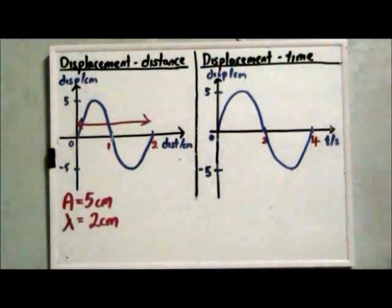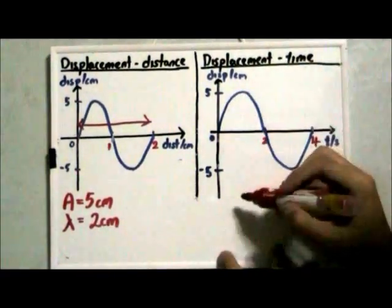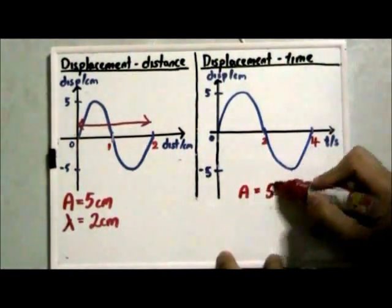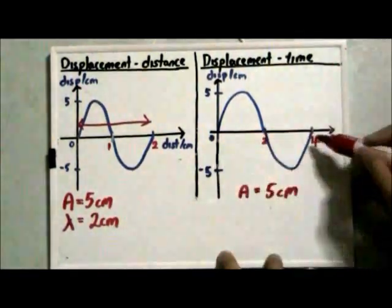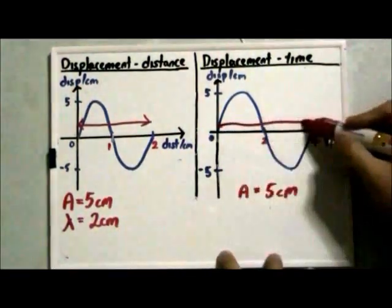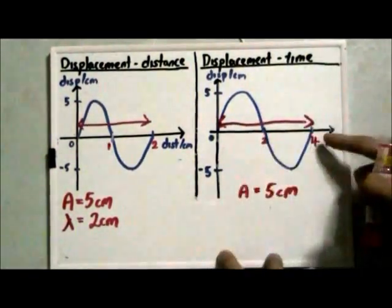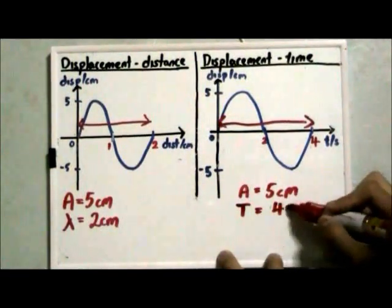How about a displacement-time graph? From the Y axis, same thing, we can find what is the amplitude, which is 5 cm. And the X axis represents the time. So if we trace out one waveform, this will be the time taken for one wave. And this is what we call our period. So period is equal to 4 seconds.